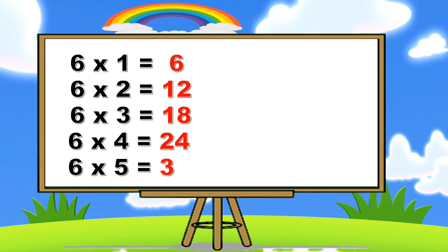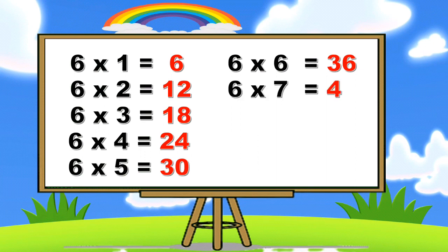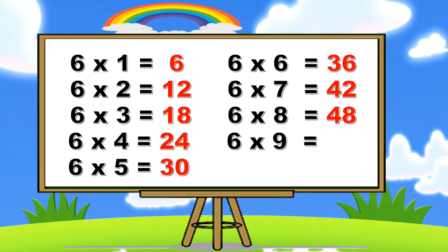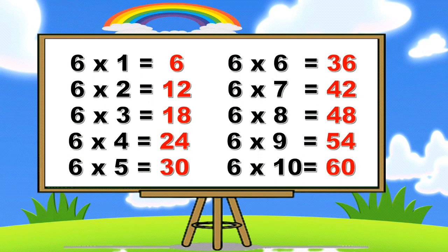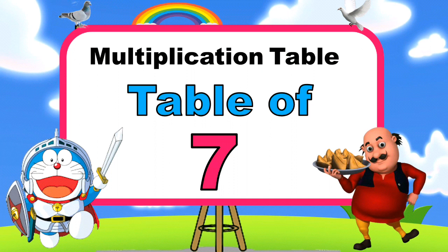Six ones are six, six twos are twelve, six threes are eighteen, six fours are twenty-four, six fives are thirty, six sixes are thirty-six, six sevens are forty-two, six eights are forty-eight, six nines are fifty-four, six tens are sixty.